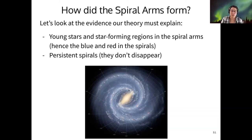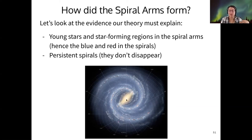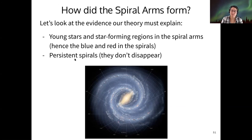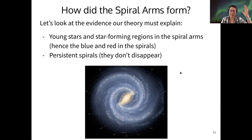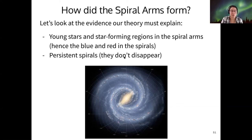We see spirals nearby, like Andromeda, but we also see very distant spirals, meaning that there have been spiral galaxies for most of the history of the universe. That means they're presumably persistent over time — though it could also mean that a galaxy develops spiral arms and they get destroyed later, but they seem to be a persistent feature.